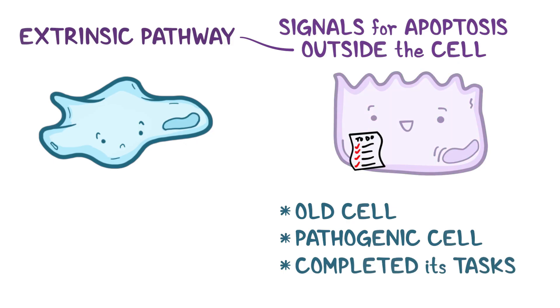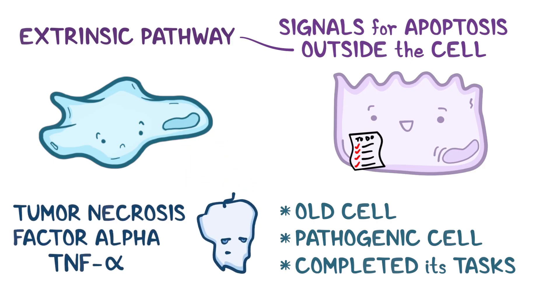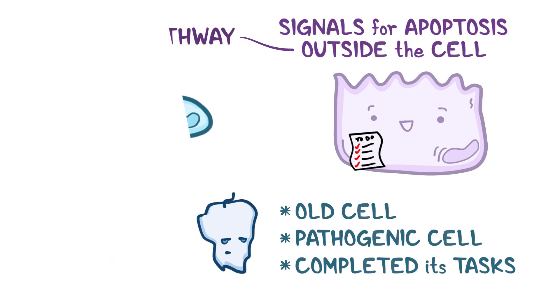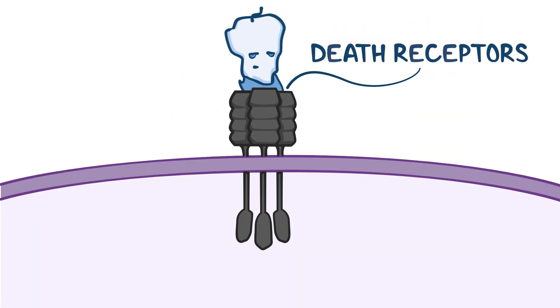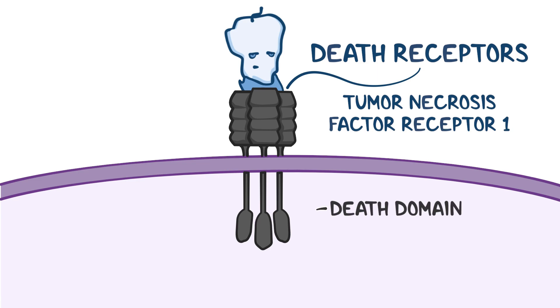In these situations, a macrophage can initiate apoptosis by releasing tumor necrosis factor alpha, or TNF-alpha, a cell signaling protein, that binds to very appropriately named death receptors on the target cell membrane, one example being tumor necrosis factor receptor 1. The cytosolic end of this receptor dives deep inside the cell, and it's called the death domain.